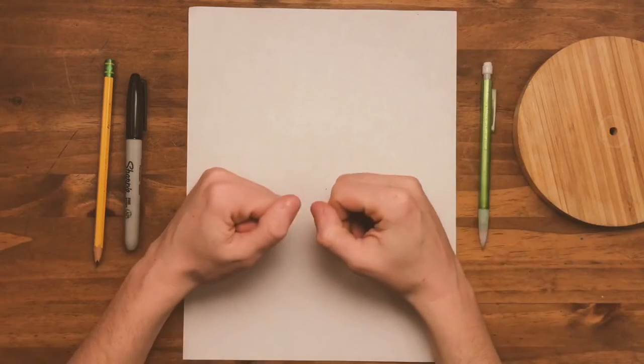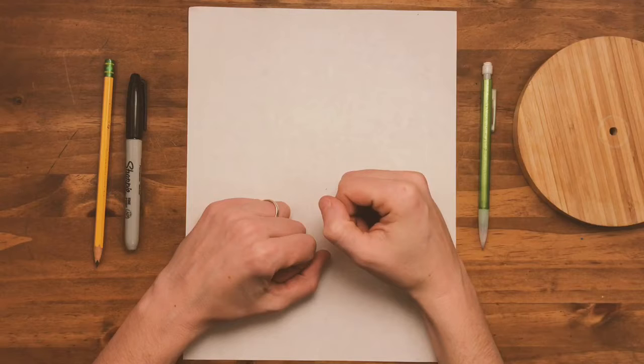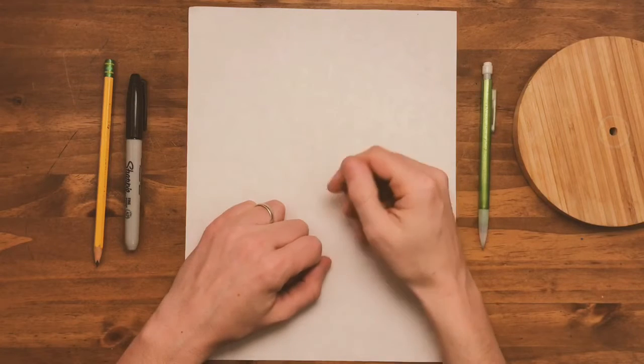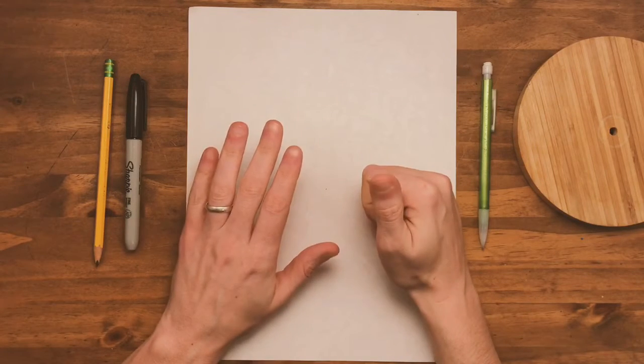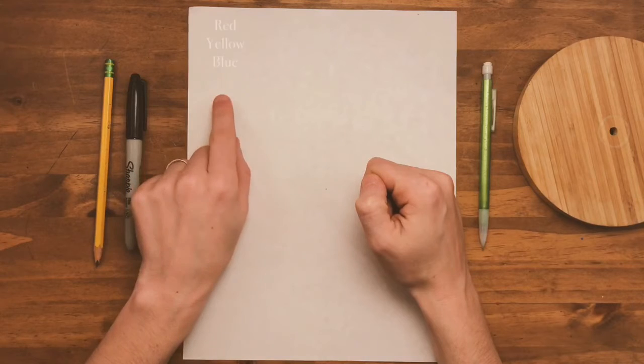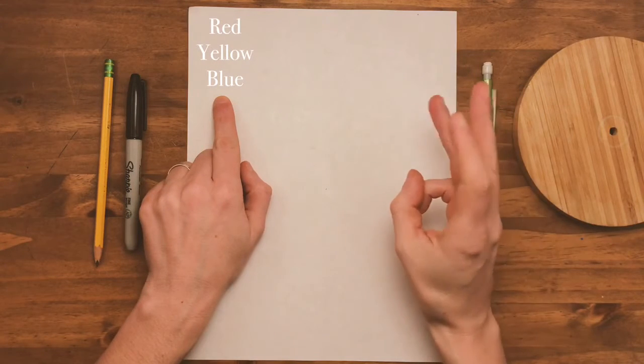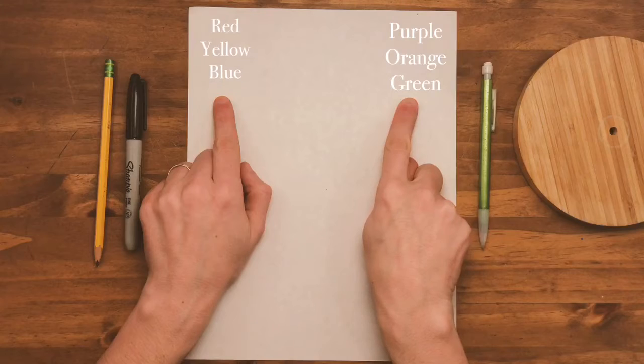So we're going to start by making our color wheel. Before we make that, we need to know how many pieces of the pie that we need. We're going to have six colors. Three primary: red, yellow, and blue. And three secondary: purple, orange, and green.